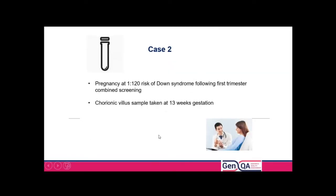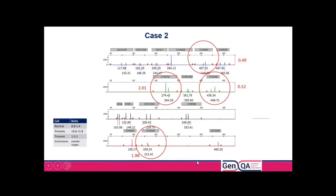Case two: a pregnancy at 1 in 120 risk of Down syndrome following first trimester combined screening. CVS was taken at 13 weeks gestation. Looking at the result: chromosome 21 shows a 1:1 ratio within normal range, chromosome 18 is within normal range. But chromosome 13, which is circled, shows abnormal results with ratios within the trisomic range: 0.49, 0.52, 2.01, 1.98 — right within the trisomic range. However, they are all biallelic results — no markers showing three alleles.